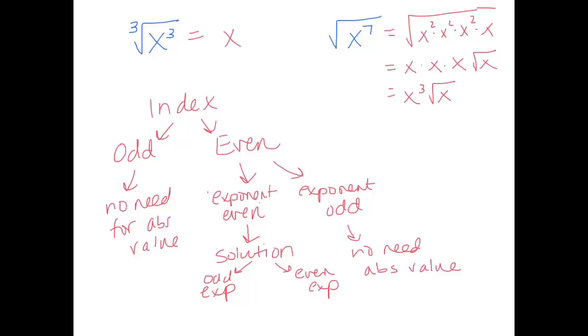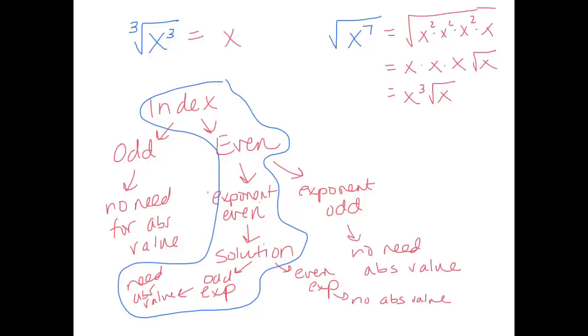If it had an even exponent, it would have turned itself positive again. If it doesn't have an even, it has an odd exponent, then it's going to need the absolute values. So I'm going to say no absolute value for an even exponent. Need absolute value if it's an odd exponent. So look at this. These situations, only one of them needs absolute value. Even index, even exponent inside the radicand, and an odd exponent on the solution.